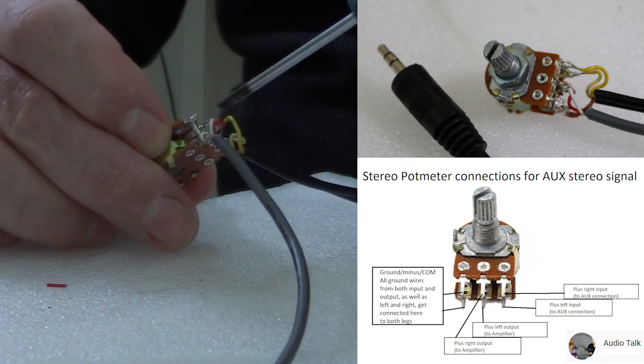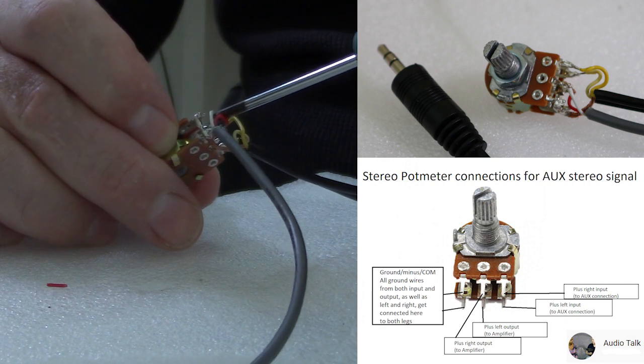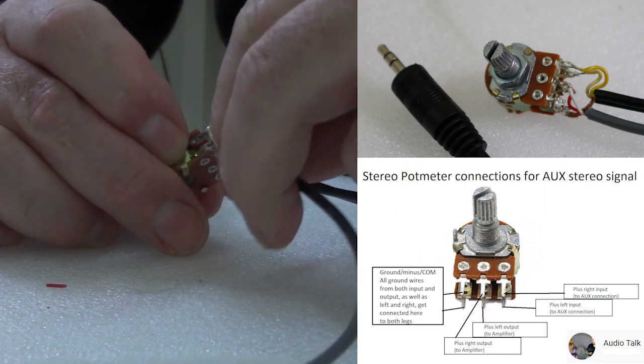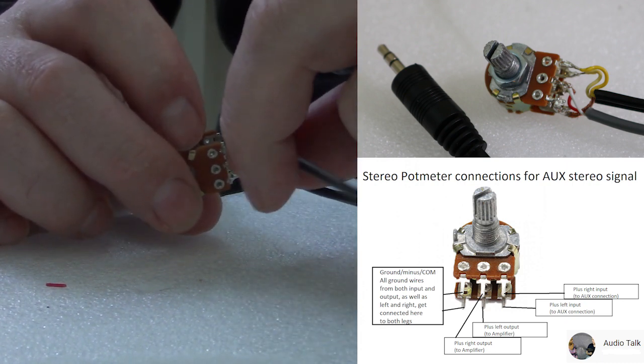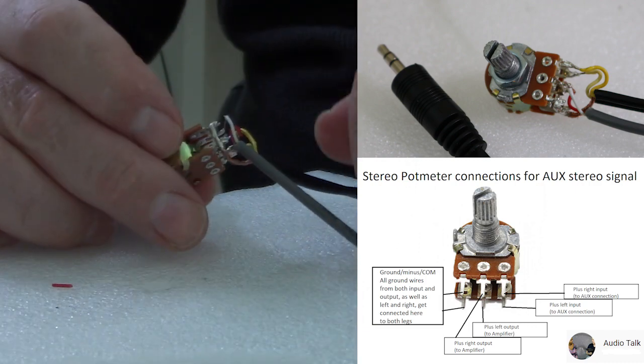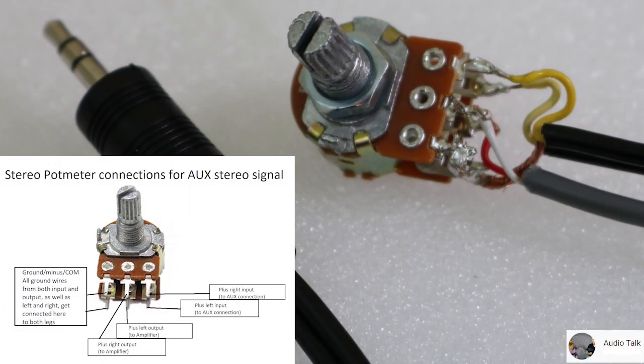Just make sure that nothing is touching each other except for the grounds, you don't care about those. They can just touch each other all they want. But the plus signals, all four plus signals, need to be kept very separate. So here's Ken from AudioTalk. I hope you got something out of it. Have fun with your projects. Take care. Bye.